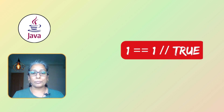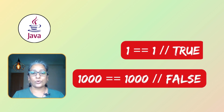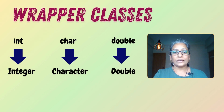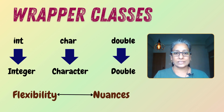One of the tricky Java interview questions you might encounter is this: why does one equal to one evaluate to true, but thousand equal to thousand evaluate to false when dealing with integer objects? In Java, wrapper classes allow us to use primitive data types like int as objects. This adds flexibility but also introduces some surprising subtleties.